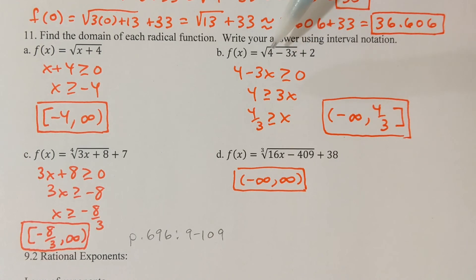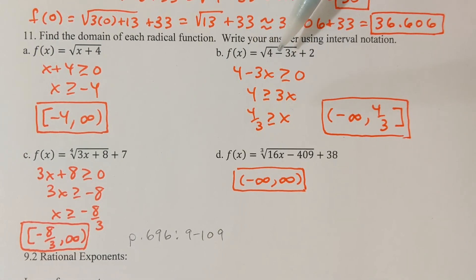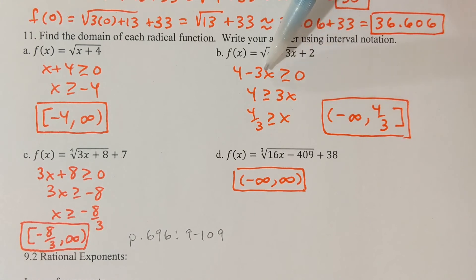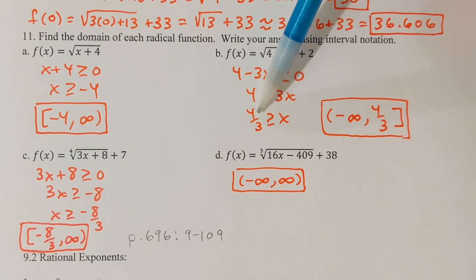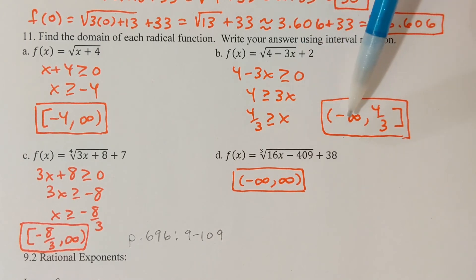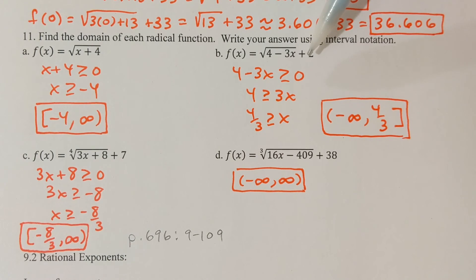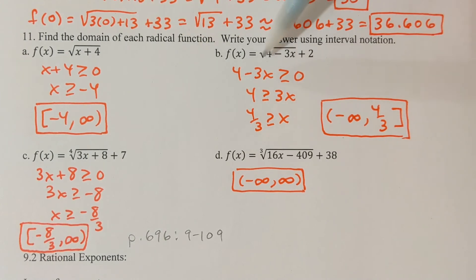For the next one, find the domain of f of x. I want the expression underneath the square root not to be negative, so I set up a side calculation: 4 minus 3x must be greater than or equal to 0. Adding 3x and dividing by 3, anything less than or equal to 4 thirds is going to be okay. Anything bigger than 4 thirds will produce a negative underneath the square root, which is not a real number. Note that the plus 2 outside the radical is not relevant to finding the domain — it's all about what's underneath the square root.